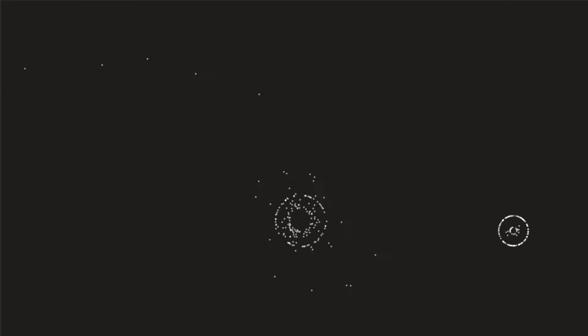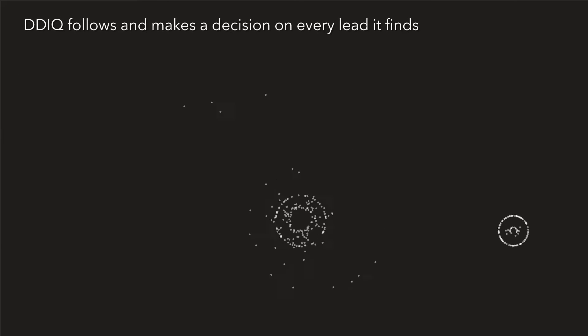Unlike a human, DDIQ doesn't have to make choices on which leads to follow. It follows and makes a decision on every lead it finds.